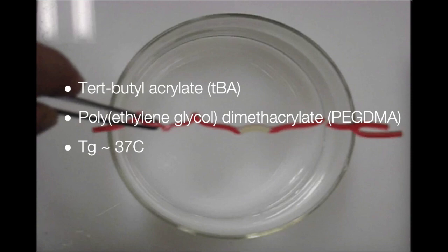Here is an example. This shape memory polymer is made of two polymers. One is called tert-butyl acrylate and the other one is polyethylene glycol dimethacrylate.